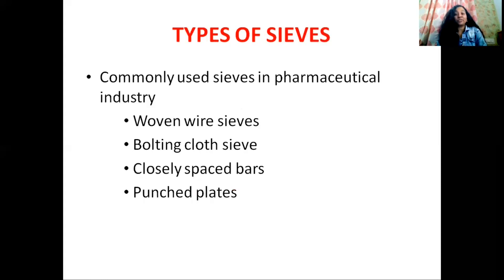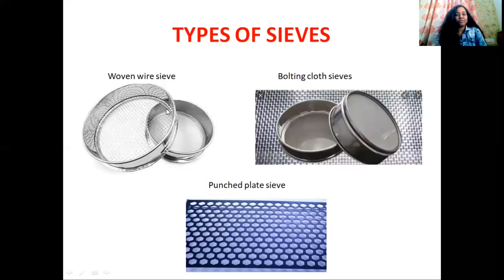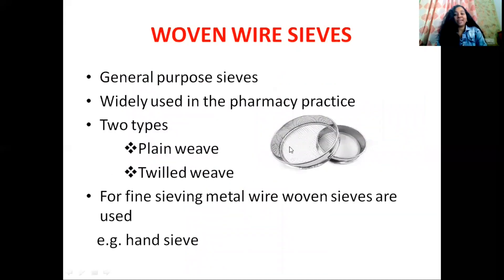Let's see what are the different types of sieves commonly used in our pharmaceutical industry: woven wire sieves, bolting cloth sieves, closely spaced bars, and punched plates. Here you can see woven wire sieves, bolting cloth sieves, and punched plate sieves. Punched plate sieve is also known as perforated sieve. Woven wire sieves are commonly used, general purpose sieves widely used in pharmaceutical industry and pharmacy practice.